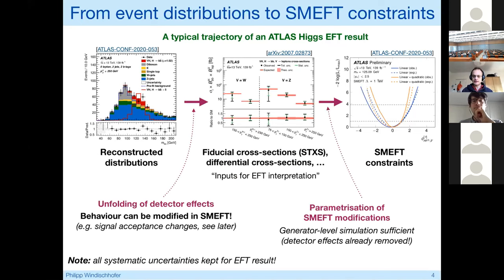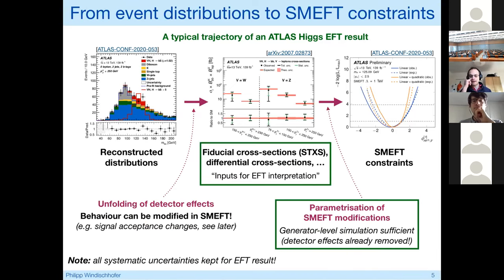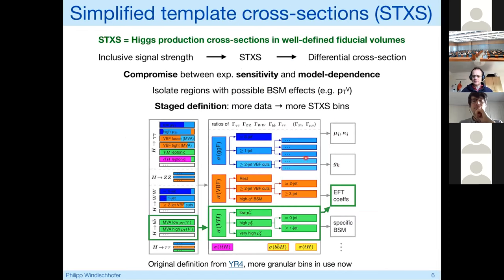Before we go into specifics, let me paint the big picture of how we arrive at an ATLAS Higgs EFT result. At the very beginning, we start with reconstructed distributions, typically invariant masses or multivariate discriminants. We use the information in those distributions to unfold or extract certain cross sections, can be fiducial cross sections in the STXS scheme, or explicitly unfolded differential cross sections. These form the input we use to extract constraints on SMEFT operators.